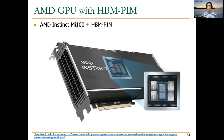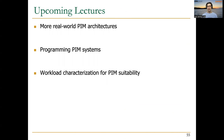Basically, Samsung did one experiment where they replaced the conventional HBM-2 memory in AMD GPUs with HBM PIM memory and compared it to a baseline without HBM PIM. They observed approximately two times performance improvements and energy savings. I think this is pretty good news, and hopefully we will learn more about this experiment and other experiments with other neural networks in the near future. This is basically all for today. I would like to invite you to the upcoming lectures where we will continue talking about real-world PIM architectures, how to program PIM systems, workload characterization for PIM suitability, research proposals, and more. Thank you very much for your attention. See you in the next lecture.